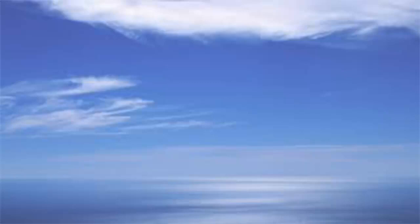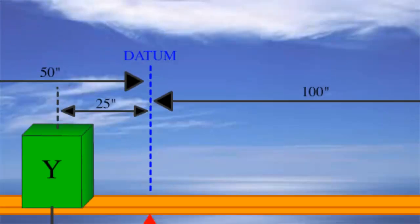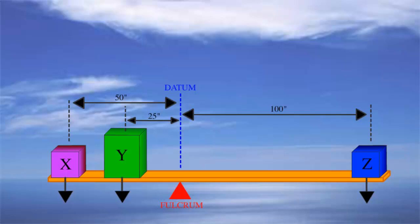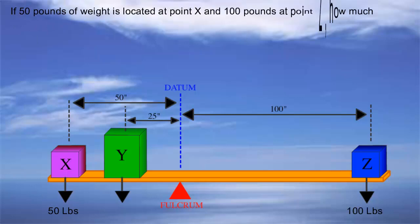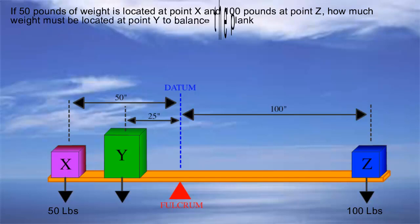Let's look at an old question from the Private Written, which is still part of the ATP Written. The question refers you to figure 62 on the Private Book and 35 on the ATP Book, and asks, if 50 pounds of weight is located at point X and 100 pounds at point Z, how much weight must be located at point Y to balance the plank? The possible answers are 30 pounds, 50 pounds, and 300 pounds.